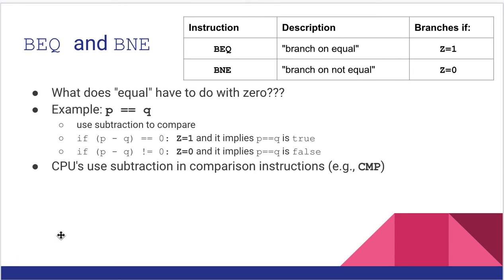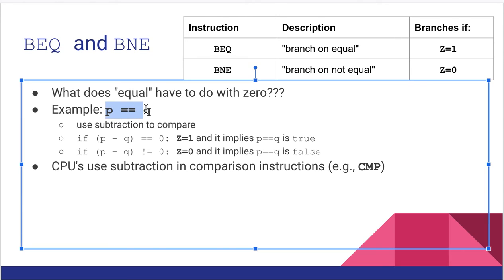All right, now I promised we'd talk about branch on equal and branch on not equal and what their relationship is to the zero flag. So first bullet: what does equal have to do with zero? So think about this. We have a comparison between two values. We're trying to decide is some value P equal to some value Q. So subtract Q from P. So if P minus Q equals zero, that means Z equals one.